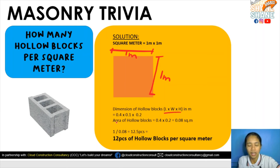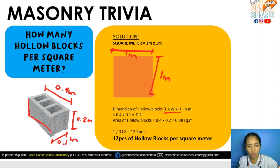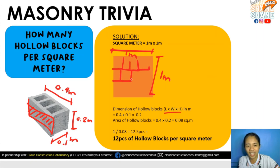The dimension of hollow blocks normally used is 0.4 by 0.1 by 0.2 meters — that is length times width times height of the hollow block. The area per hollow block considers its length of 0.4 meters and height of 0.2 meters. So we compute the area which is 0.4 by 0.2 to find how many pieces can be laid in the given area.